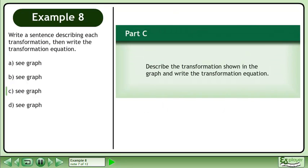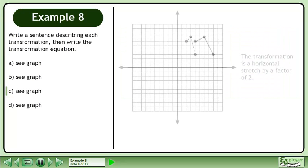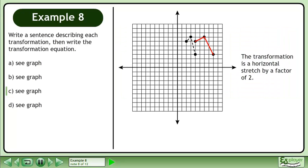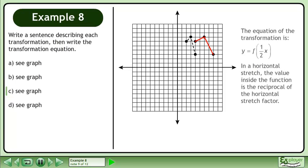In Part C, we'll describe the transformation shown in the graph and write the transformation equation. The transformation is a horizontal stretch by a factor of 2. The equation of the transformation is y equals f. In a horizontal stretch, the value inside the function is the reciprocal of the horizontal stretch factor.